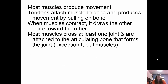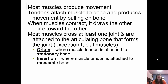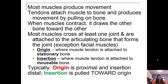Most muscles produce movement. Tendons attach muscle to bone and produce the movement by pulling on that bone. When the muscle contracts, it draws one bone towards another. Most muscles cross at least one joint and are attached to the articulating bones that form that joint, with the exception of facial muscles. We have two attachment points: an origin and an insertion. The origin is where the muscle tendon is attached to the stationary bone — the bone that does not move. The insertion is where the muscle tendon is attached to the movable bone. Usually the origin is proximal and the insertion is distal, and the insertion is pulled towards the origin.